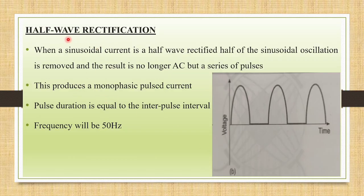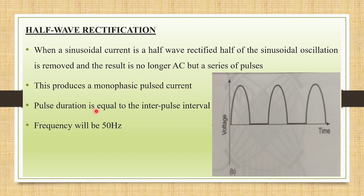The first rectification is half wave rectification. When a sinusoidal current is half wave rectified, half of the sinusoidal oscillation is removed and the result is no longer alternating current but a series of pulses or pulse current. This produces a monophasic pulse current. The pulse duration is equal to the interpulse interval. The frequency will be 50 Hz.